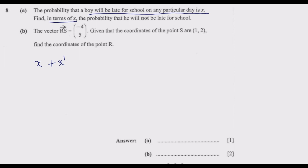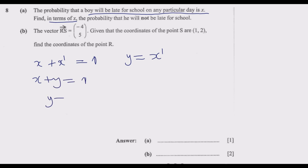Remember, probability is the likelihood that an event happens. If you have a probability of 0.5, it means 50% of the time. All possible outcomes, when you add their probabilities, must equal 1. In this case there are two possible outcomes: either the boy is late or on time. So when we add these two probabilities we get 1. Let y be x-complement, then x plus y equals 1, so y equals 1 minus x, where 0 ≤ x ≤ 1.